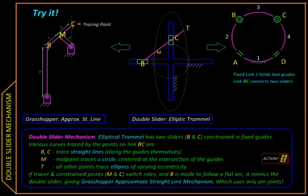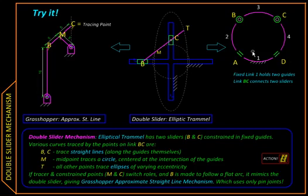Having seen a four-bar mechanism with four links connected by four revolute pairs, and then having replaced one of the revolute pairs with a slider to get a slider-crank mechanism, we are now going a step ahead and replacing one more revolute pair with a sliding pair.